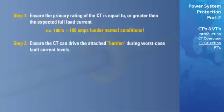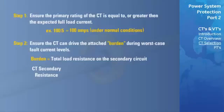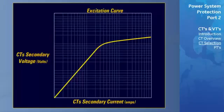The second step is to ensure that the CT can drive the attached burden at the worst-case fault current levels without saturating. The burden refers to the total load resistance of the secondary circuit. The calculation for the burden is CT secondary resistance, which is the amount of resistance on the secondary windings of the CT, added to the connection wire resistance, which is supplied by the manufacturer, added to the relay's burden resistance, which is the resistance within the protection relay. A CT becomes saturated when the secondary voltage reaches the knee point of the excitation curve.